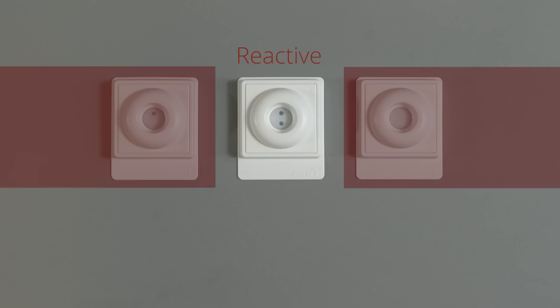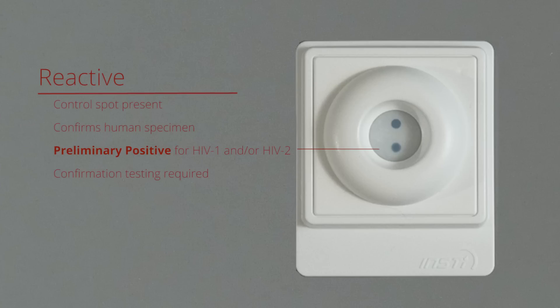Reactive result: two blue spots. One control spot and one test spot that are discernible above any background tint indicates that the specimen contains HIV-1 and/or HIV-2 antibodies. Following a reactive test result, HIV confirmation testing should be conducted.